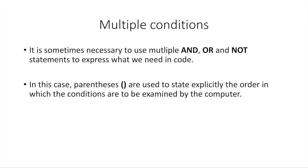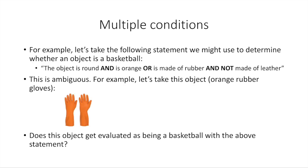Sometimes we need to use multiple condition statements to express what we want to say, like in the examples just now. We use these little keywords AND, OR, and sometimes NOT to reverse something. That's how we basically tell the computer how we want our condition to be. Sometimes the computer gets confused if we're not very explicit about it. And so the way to be very clear about what we want and how we want things to work is to use parentheses. These little parentheses basically tell the computer to examine a particular thing first. Let's take an example.